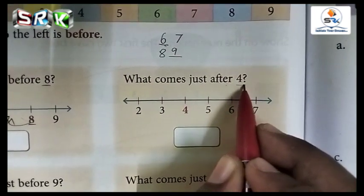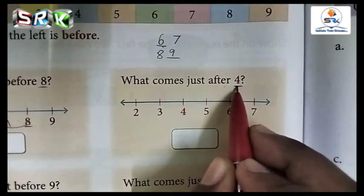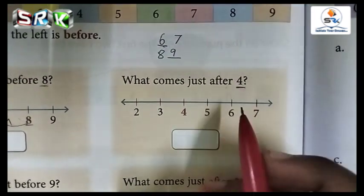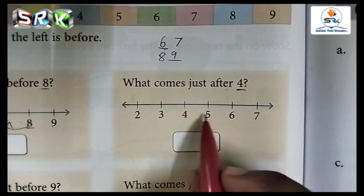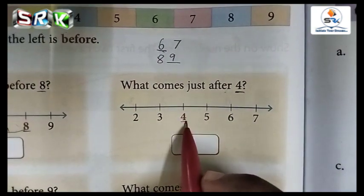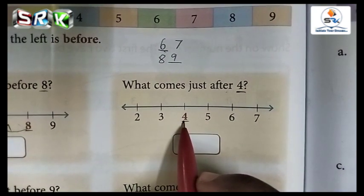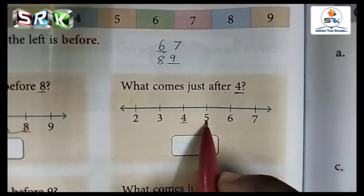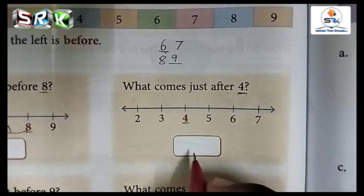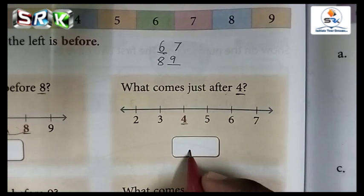Next one: what comes just after? After means 'pinnadi'. The number here is 4. See the number line — four after number is five. Write 5 neatly in the box.